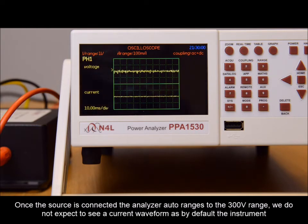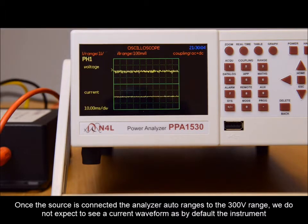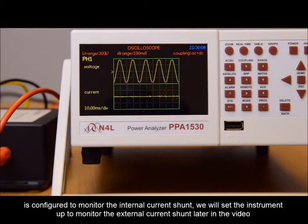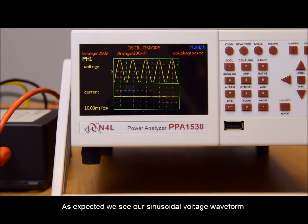Once the source is connected, the analyzer auto-ranges to a 300 volt range. We do not expect to see a current waveform, as by default the instrument is configured to monitor the internal current shunt. We will set the instrument up to monitor the external shunt later in the video. As expected, we see our sinusoidal voltage waveform.